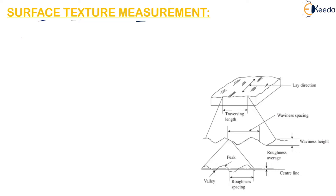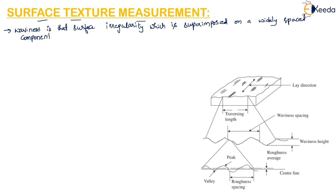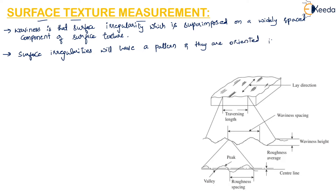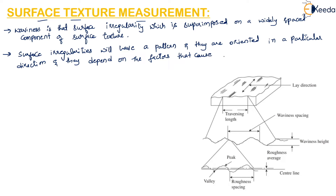If we take a look at the topology of a surface, we can notice that there are surface irregularities which are superimposed on a widely spaced component of surface texture, and this is called waviness. Surface irregularities generally have patterns and are oriented in a particular direction depending upon the factors that cause these irregularities.